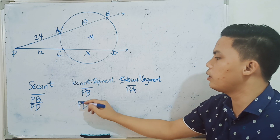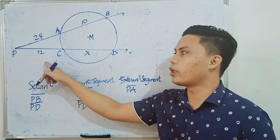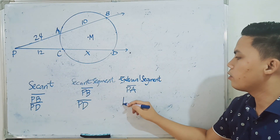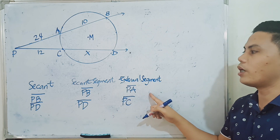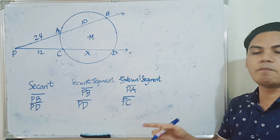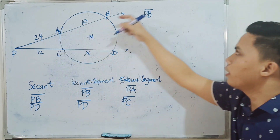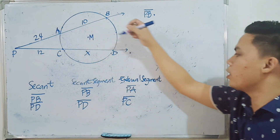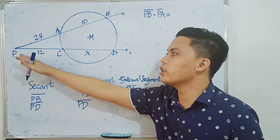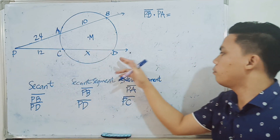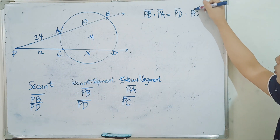For secant segment PD, the whole PD is the secant segment, and its external segment — the part outside the circle — is segment PC. The theorem states that the product of the secant segment and its external segment equals the product of the other secant segment and its external segment. In symbols: PB times PA equals PD times PC.